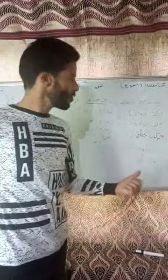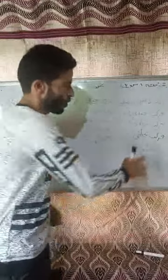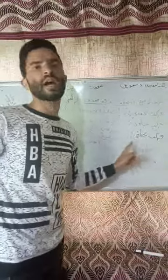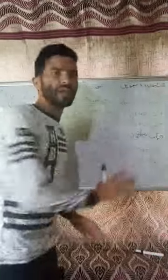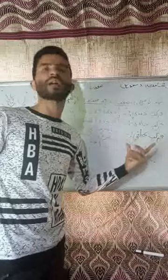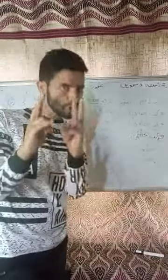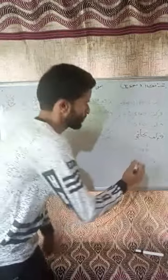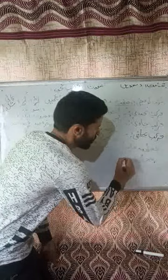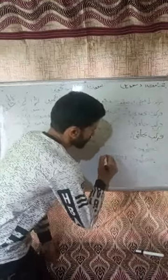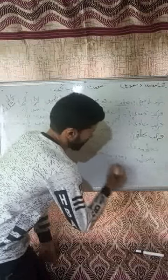Jab Muraqab matof alay aur matof se mil kar banta hai, to wo kehlata hai Muraqab Atfi. Ataf ka matlab hai conjunction, yaani Urdu mein 'aur' ya 'wa' ki tarah. Huruf e ataf do chizun ko merge karte hai, yeh connectors hote hai. Mato fi alay aur mato f — for example, zemine o asma, ahmad or nadim.